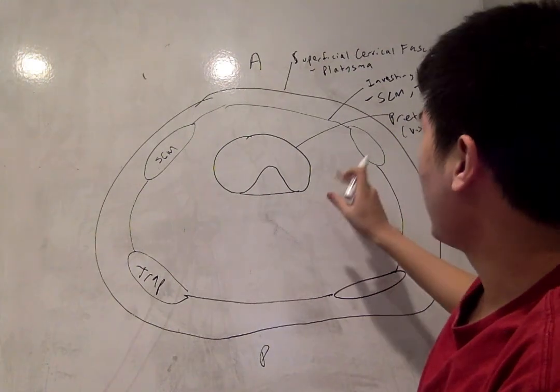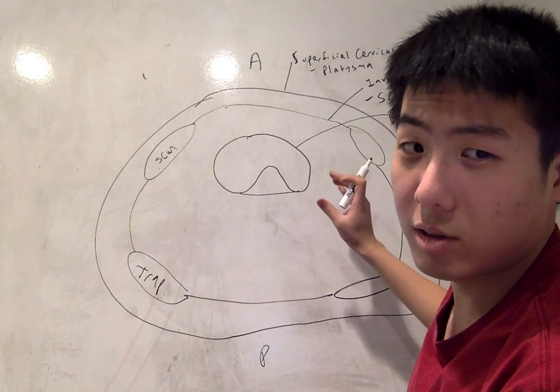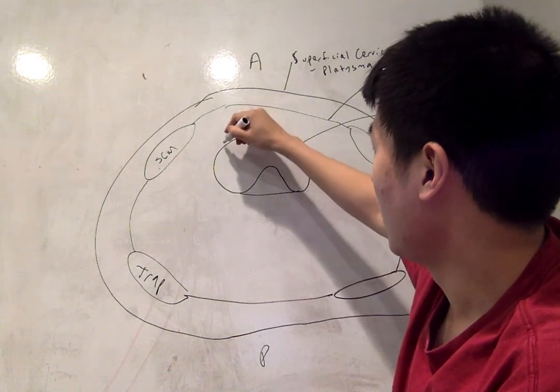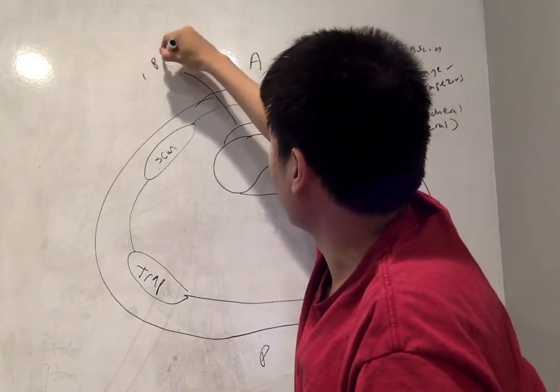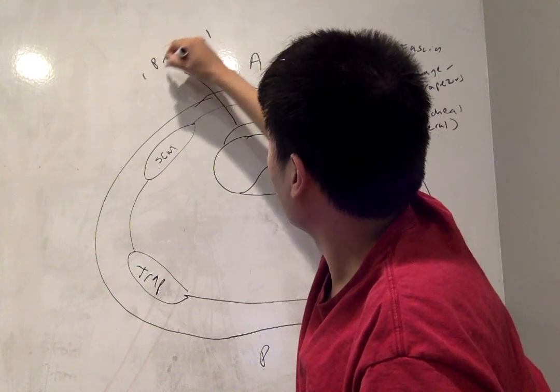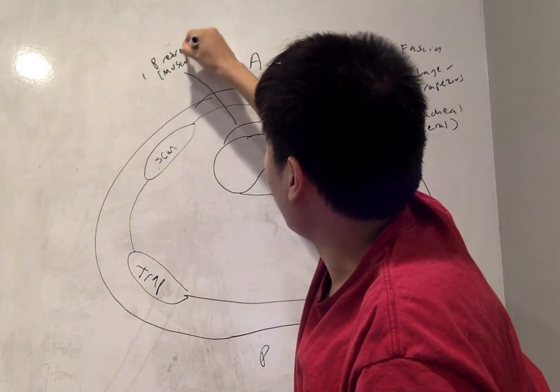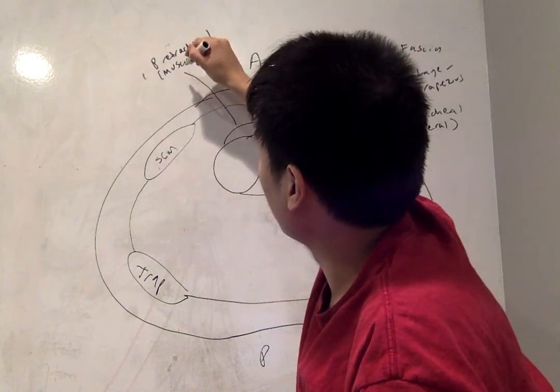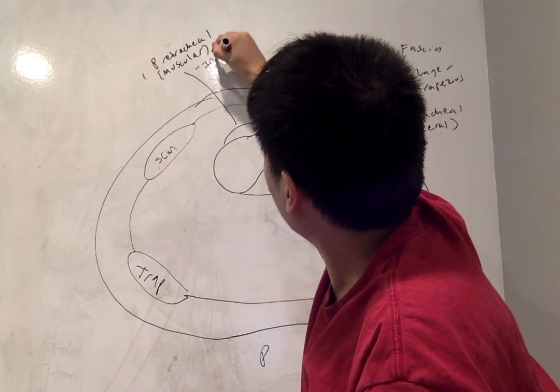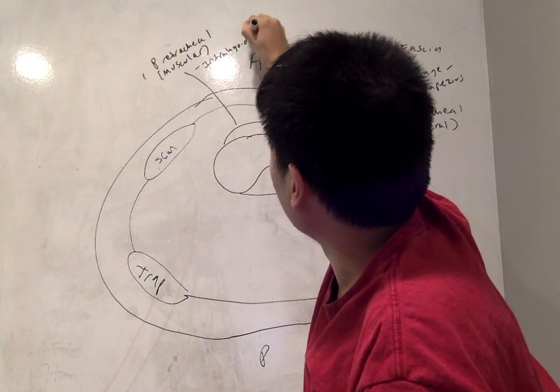And then directly anterior to the visceral portion of the pre-tracheal fascia is a muscular layer. So this is the pre-tracheal muscular portion, and the muscular portion of the pre-tracheal fascia has the infrahyoid muscles.